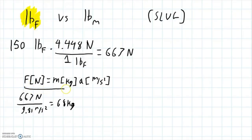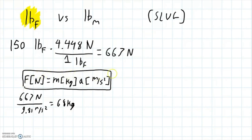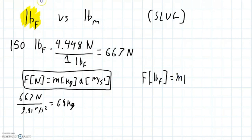Just like we have the metric F = ma with base units Newtons, kilograms, and meters per second squared, we could also do this in the US customary system. In the imperial system, the standard unit for force is the pound force. The standard unit for mass in the imperial system is actually a thing called the slug — S-L-U-G — not like the one in your garden, but similar.